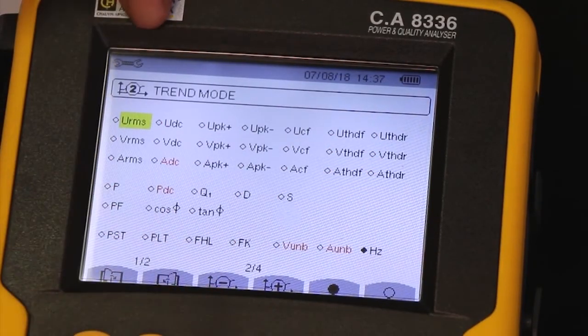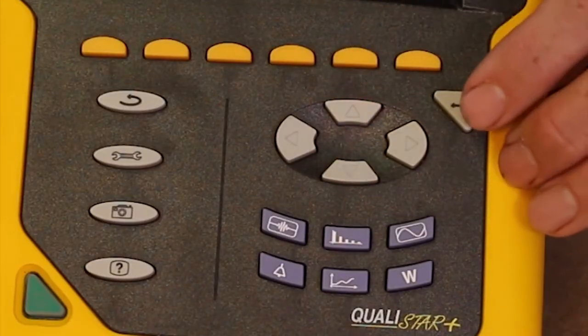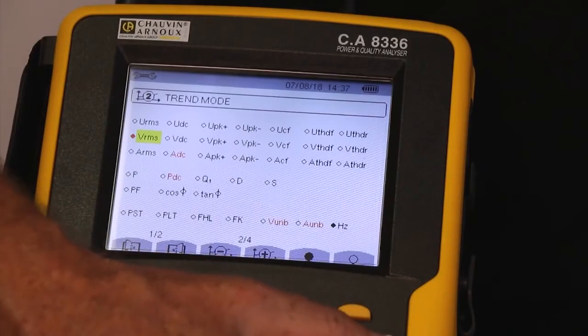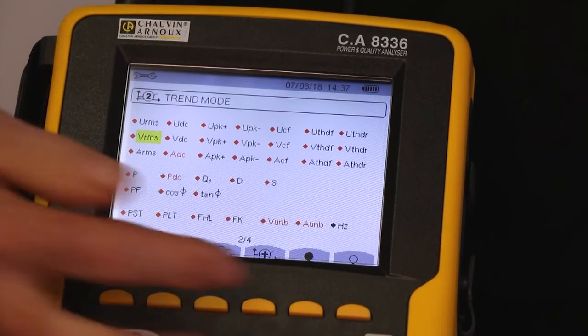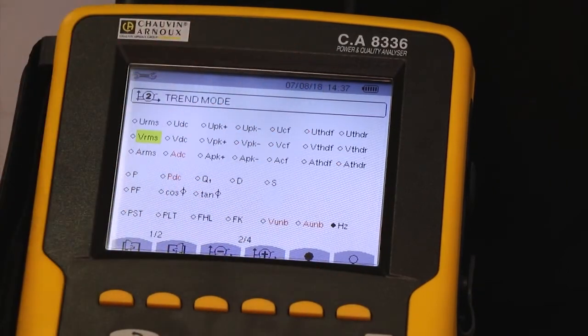Moving along to trend 2, if I was only interested in voltages and not currents, it's easy to select or deselect each parameter I want. Additionally, this key can be used to select every parameter, and this one to deselect every parameter.